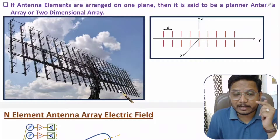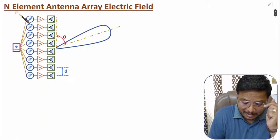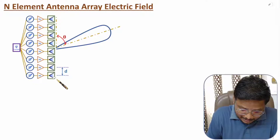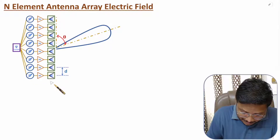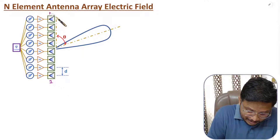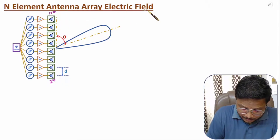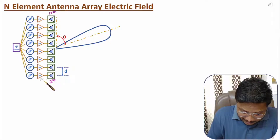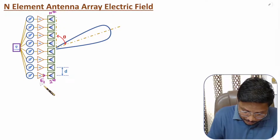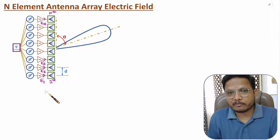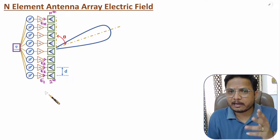Now, I will derive the equation of electric field for an n-element antenna array. Here, these are the antennas — let us consider this is the first antenna and this is the nth antenna. For n elements, we need to derive the electric field. Let us consider the electric field with the first antenna is E1, with the second antenna E2, with the third antenna E3, and likewise with the nth antenna it is En. So, the total electric field Et will be E1 plus E2 plus E3, up to En.